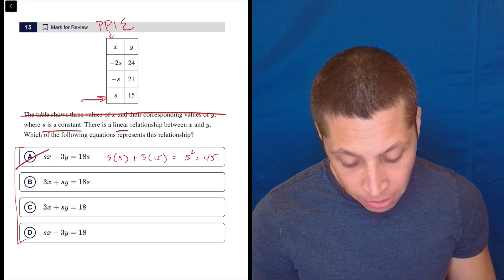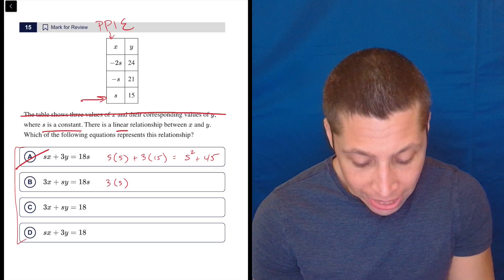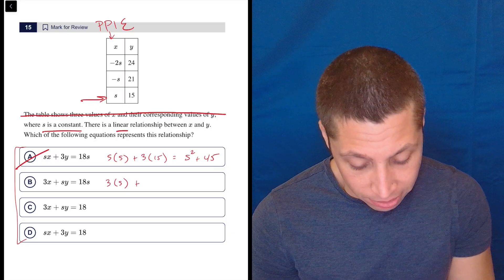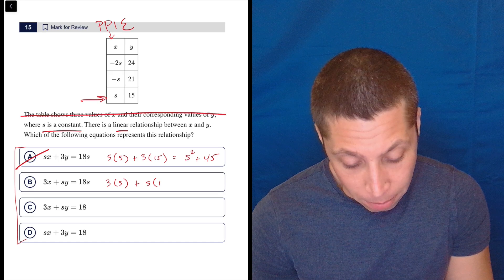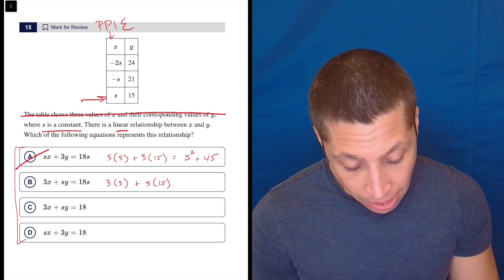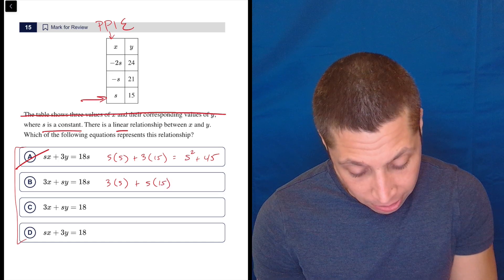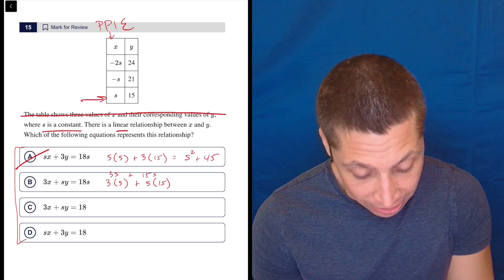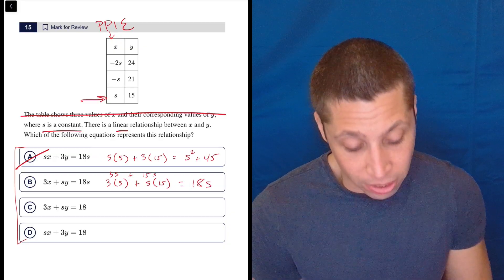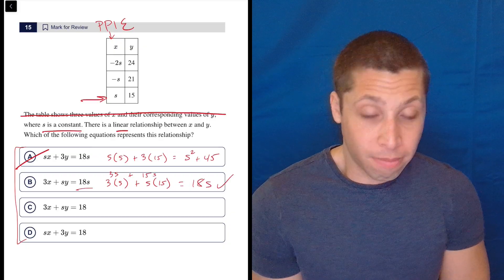But if we do it in b, we have three s, because x is s, plus s times 15. That's our y. And so, that's three s, let's write it above, three s plus 15 s is 18 s. So, that works, because that's what we wanted.